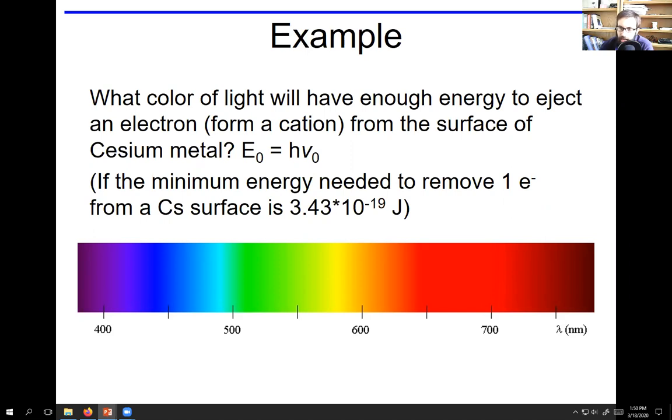E equals h nu is given to us, and we're also given the work function of cesium, which is 3.43 times 10 to the minus 19 joules. That's the minimum energy needed to remove one electron.